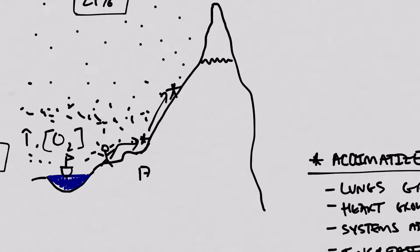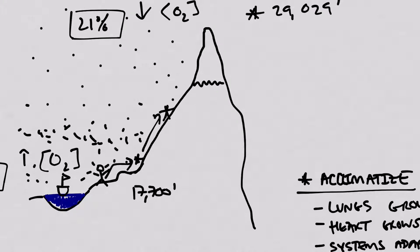They start out at base camp, which is at 17,700 feet. And then they proceed up to camp 1, which is a little higher at 19,900 feet. And then there's camp 2, which is 21,300 feet. Camp 3, which is 24,500 feet. Camp 4, which is 26,000 feet.